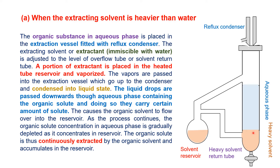A portion of the extractor is placed in a heating reservoir. When heated, vapors are formed and passed to the extraction vessel, where they go to the condenser and are condensed back into liquid state. The liquid drops pass downward through the aqueous phase containing the organic solute, carrying a certain amount of solute with them. This causes the organic solvent to overflow, and it moves from the solvent return tube into the solvent reservoir.